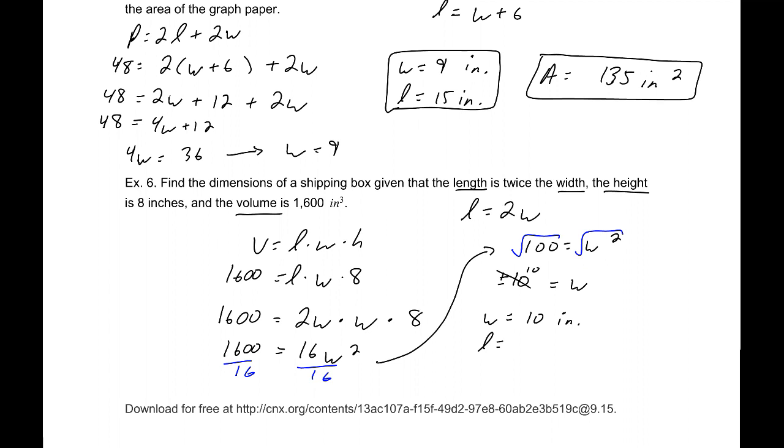Our length is twice that, so it is 20 inches. And our height we already knew was 8 inches. So if you multiply all three of those, we should get a volume of 1600. 10 times 20 times 8 is 1600. This matches the description we were given. That brings us to the end of this section on applications and some modeling.